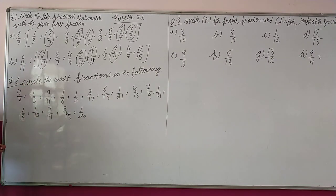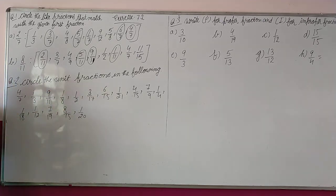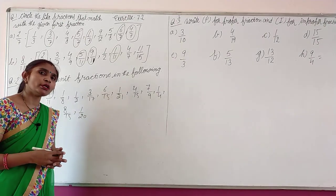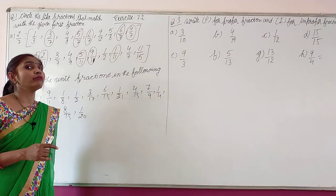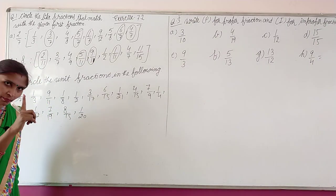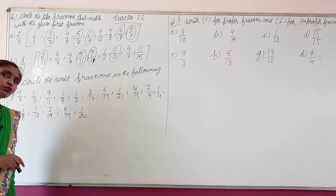Next question, question number second. Ismein 4 parts hain, 2 parts maine board pe solve ki hai, C or D parts you have to solve yourself. Question second hai now, circle the unit fractions. Unit fraction kaun se hota hai? Unit fractions are those fractions that have 1 as numerator. Jiske numerator mein one milta hai, woh fraction unit fraction hota.